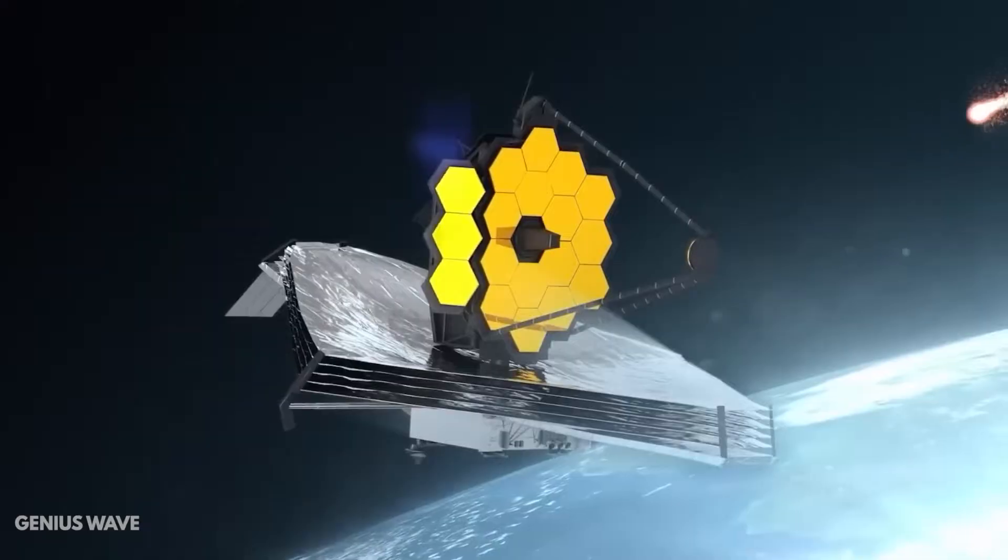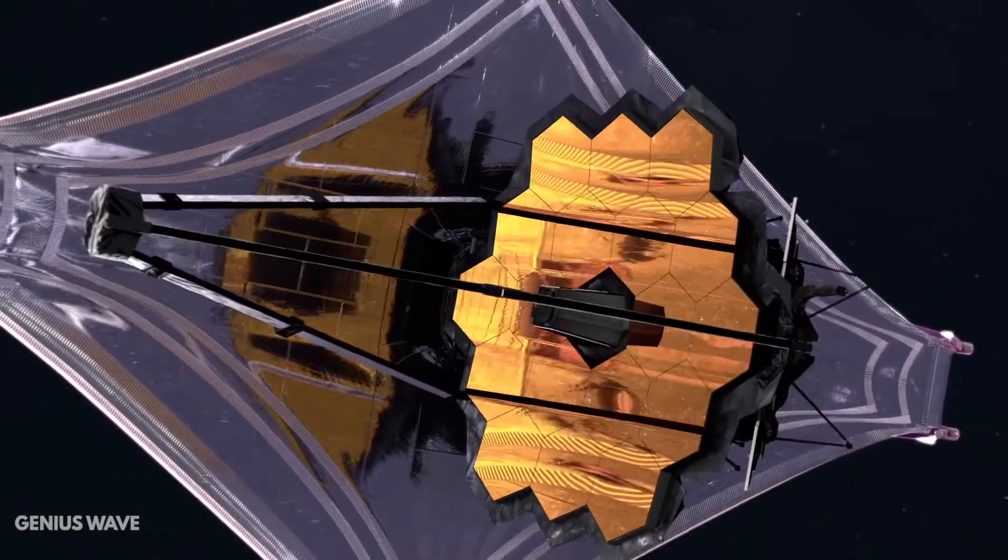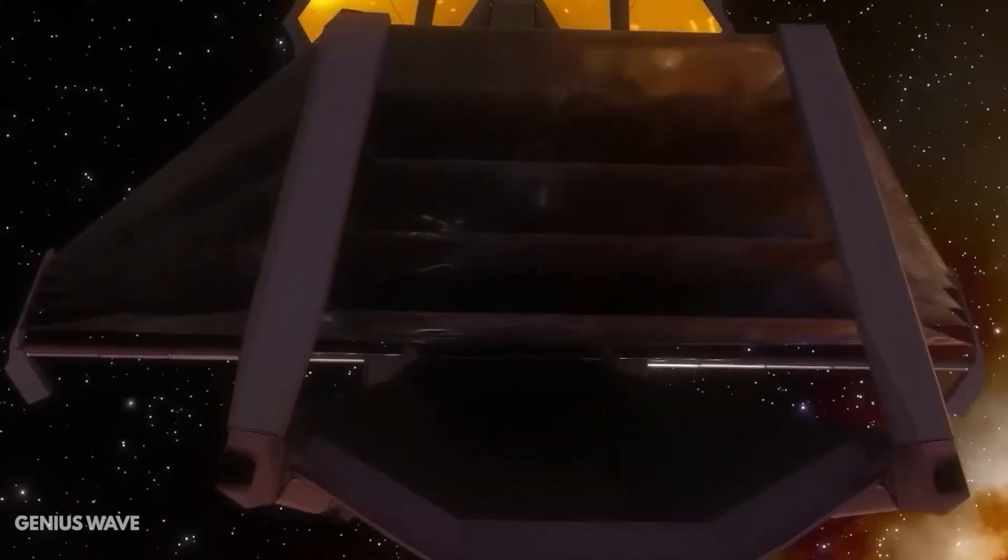According to analysis, the impact created a dimple in the C3 mirror segment, one of the 18 beryllium gold tiles that make up the Webb's 21-foot-wide primary reflector.